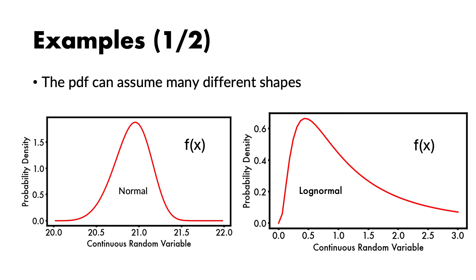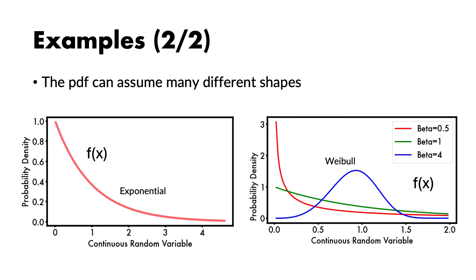The probability density function can have many different shapes. Usually a certain shape is associated with a name, such as the normal distribution, which has the shape of a bell curve, the log normal, or the exponential. There are also more flexible functions like the Weibull, which by changing the parameters of the probability density function can represent different shapes. Importantly, the Weibull can represent the normal, the log normal, and the exponential just by changing a single parameter: beta.